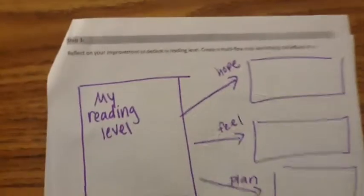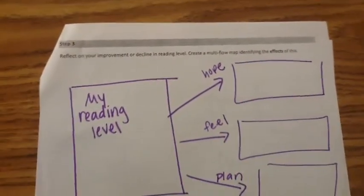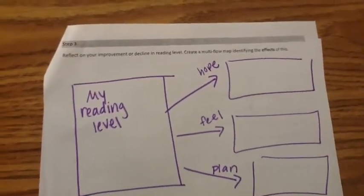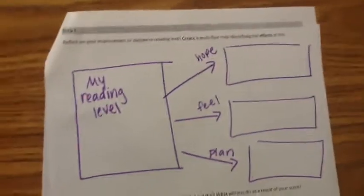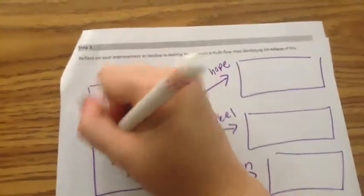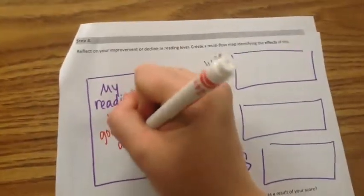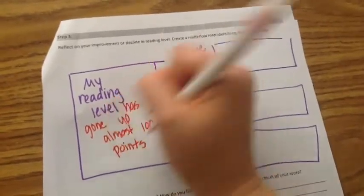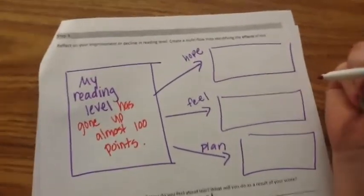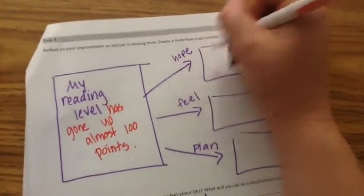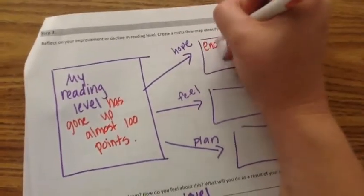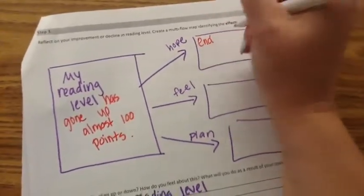Step number three asks us to reflect on our improvement or decline in reading level. We're going to create a multi-flow map identifying the effects of this. So my reading level, again, has gone up almost 100 points. And then Ms. St. Henson has suggested, or I have suggested, three different types of effects that I am going to complete. So one thing is a hope. I hope by the end of the year I have 150 points of growth.